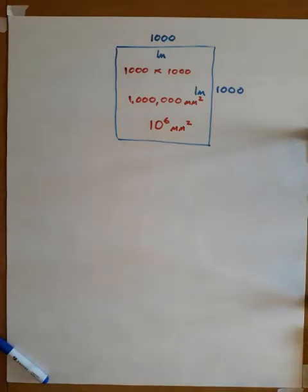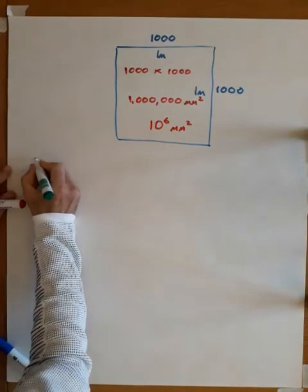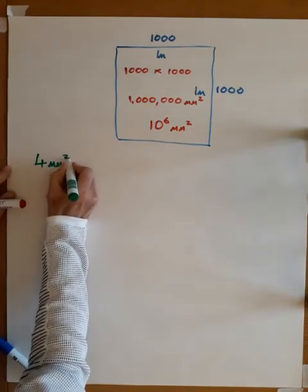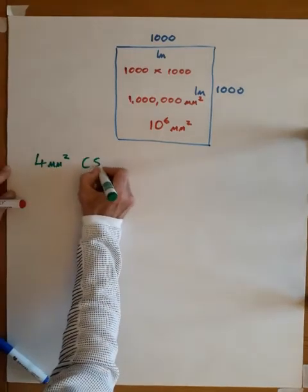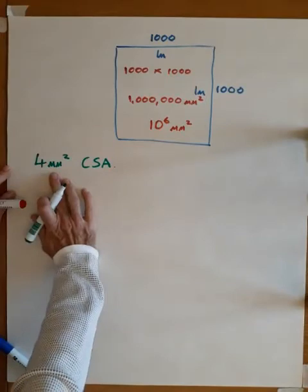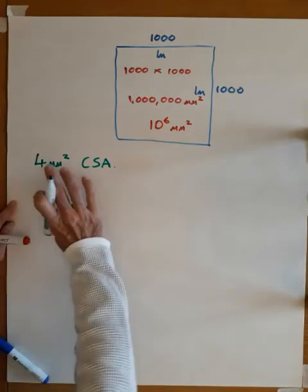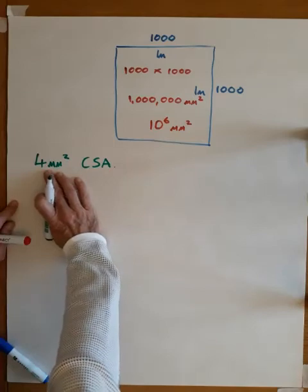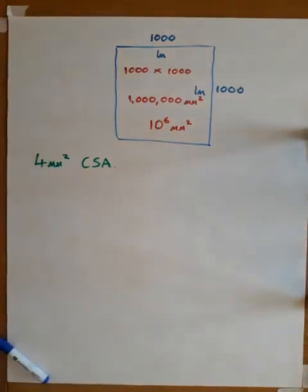So let's consider the next step. Let's suppose we have a piece of cable, which is a conductor, which is four millimeters squared in its cross-sectional area. So a piece of four mill cable. How do we convert four millimeters squared into meters squared, which is what we need to do to undertake our resistivity calculations?